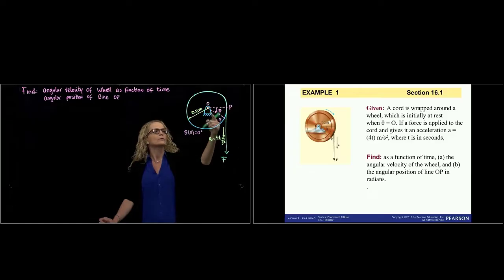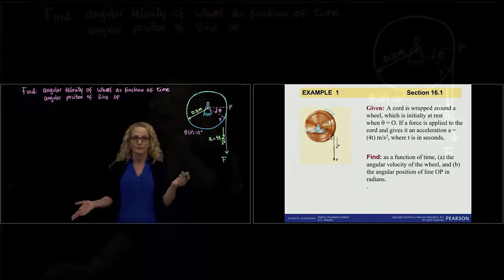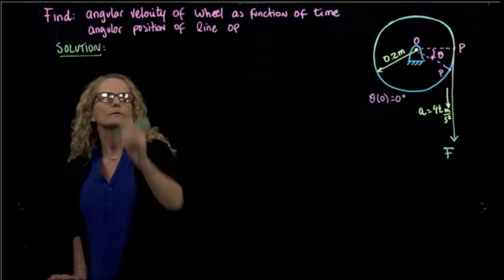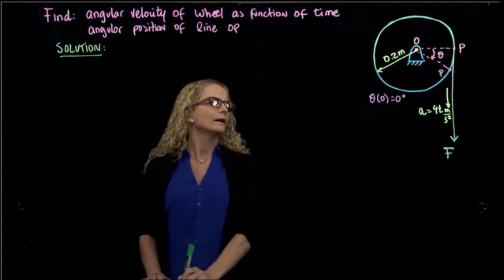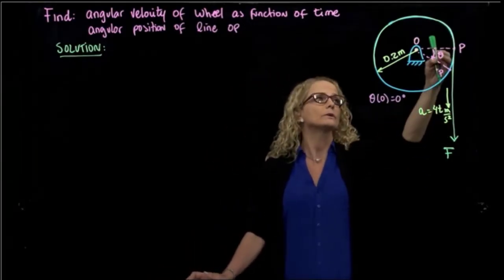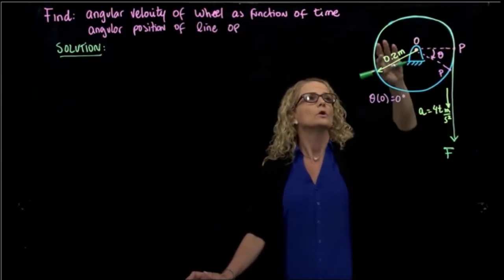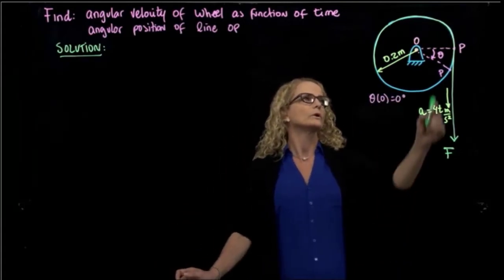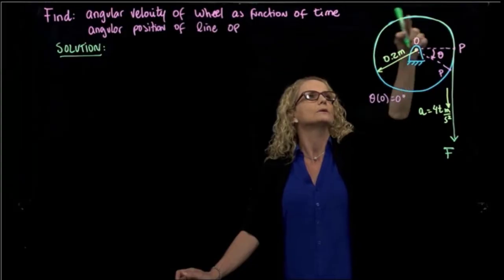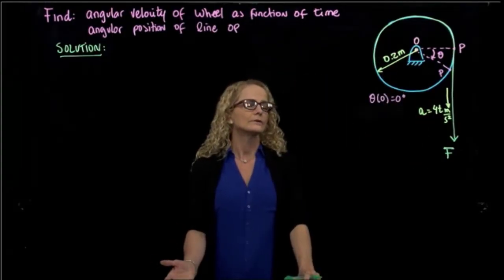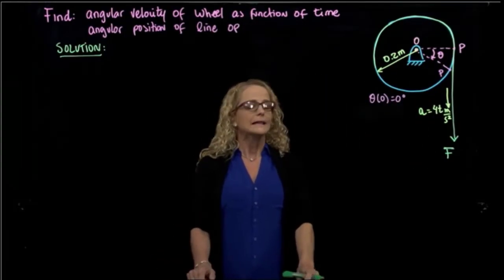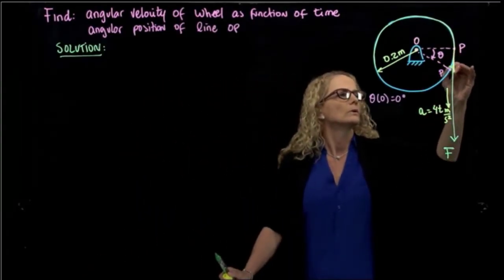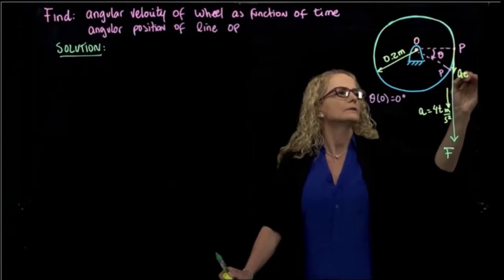The solution begins by noticing that we have a linear acceleration, so we have to relate a linear acceleration to a rotational acceleration. When we have a point rotating in a circular path, we know we have tangential acceleration and normal acceleration. This is the tangential acceleration of that point.